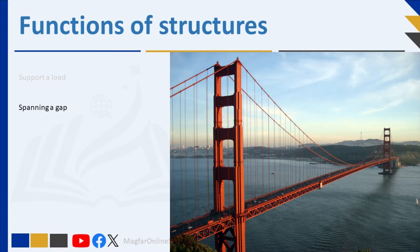Structures are also used for spanning a gap. Spanning a gap refers to creating a structure that stretches or reaches across an open space, connecting two points. It's like building a bridge between two sides of a river or creating a roof over a large room. Examples include bridges over rivers, walkways connecting two buildings, or beams supporting the roof of a large hall.